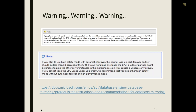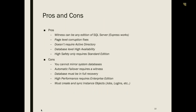One warning with database mirroring: if you're using the automatic failover option and have consistently high CPU — above 50% — you may have false positives triggering failovers. There are notes in both old and current Books Online pointing this out. If you fall into that group you may want to look at Resource Governor as a way to help manage that.